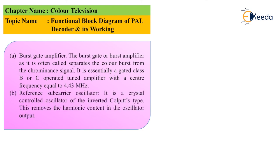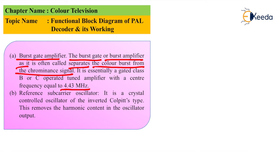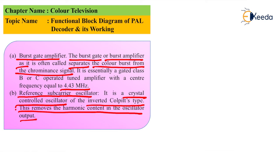The next block is the burst gate amplifier. The burst gate amplifier separates the color burst from the chrominance signal — its basic function is to separate out the chrominance signal and the burst signal. The burst has a frequency of 4.43 MHz. The reference sub-carrier oscillator is a crystal-controlled oscillator of the inverted Colpitts type, which removes harmonic content in the oscillator output.